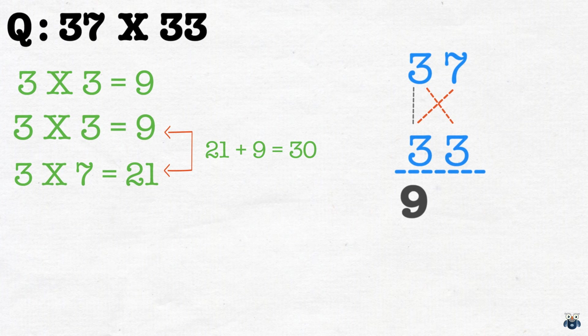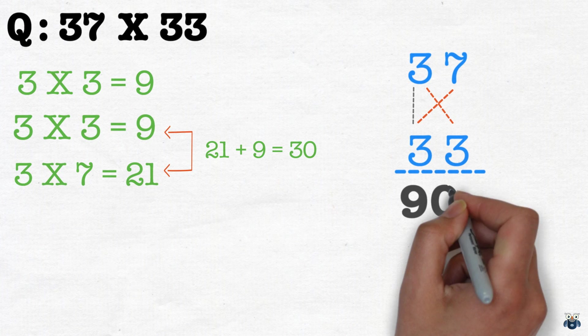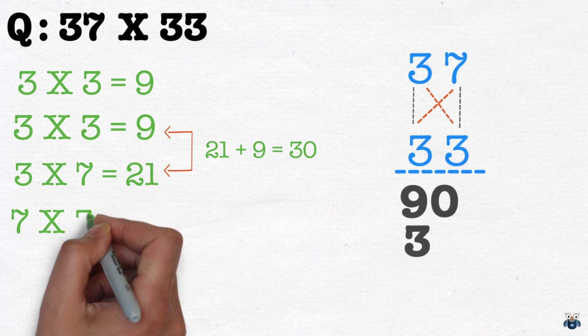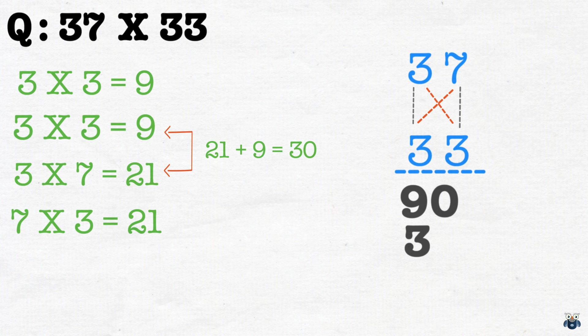So, should we put down the 30? No, we don't. We put down the 0 and carry the 3 like this. Finally, we multiply the rightmost digits. 7 times 3 is 21. Do we write down the 21? No. Just like the previous case, we write down the 1 and carry over the 2.